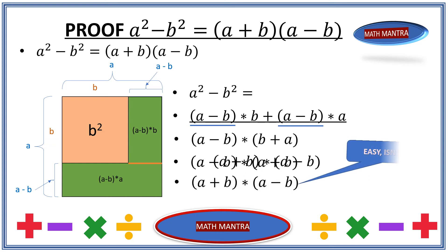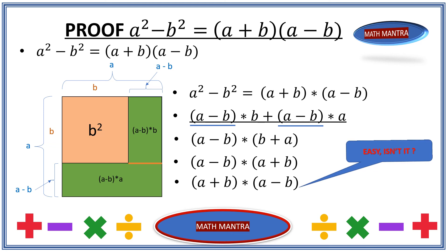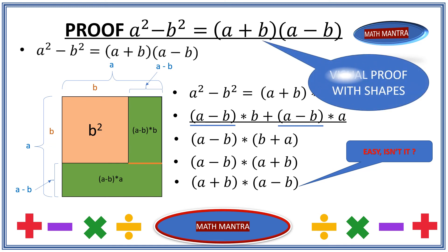Since the order of multiplication doesn't matter, let's reverse them and write it as a plus b times a minus b. Easy, isn't it? That's exactly what we were trying to prove on the right side. We started with a squared minus b squared and were able to prove it equals a plus b times a minus b — and that is the visual proof. Beautiful, isn't it?